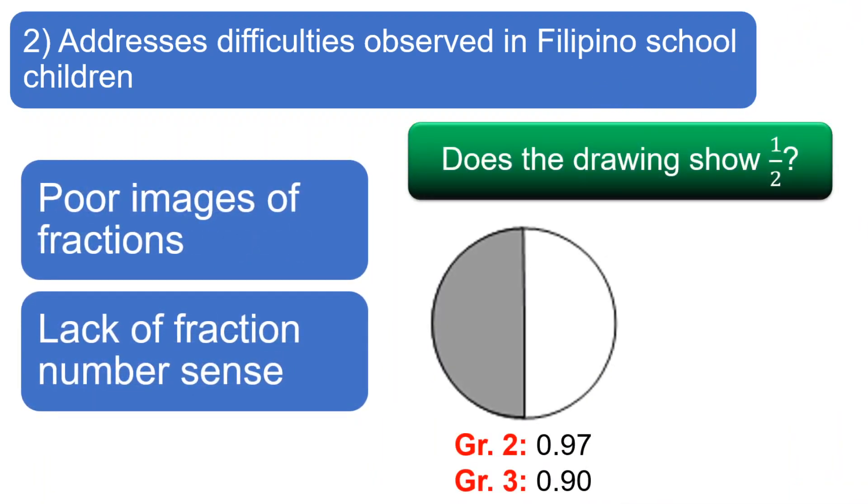Isa pang problema ang nakita namin ay fractions. Sa aming research, madaling makita ng mga bata na one half itong picture. Tama ang sagot ng 97% ng grade 2 at 90% ng grade 3 sa aming sampol. Yun pala, kung inikot lang namin ng kaunti ang drawing, mas kaunti na ang tama. 71 at 73% na lang.